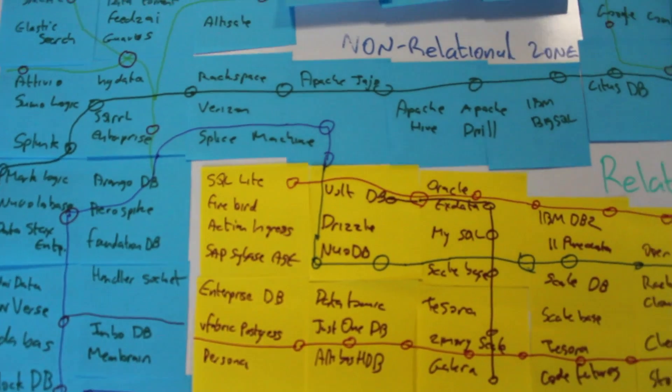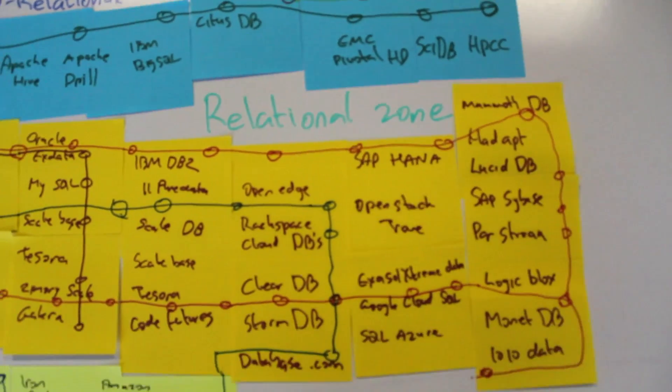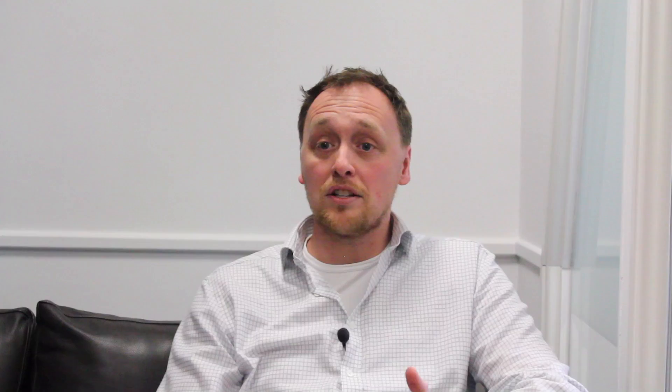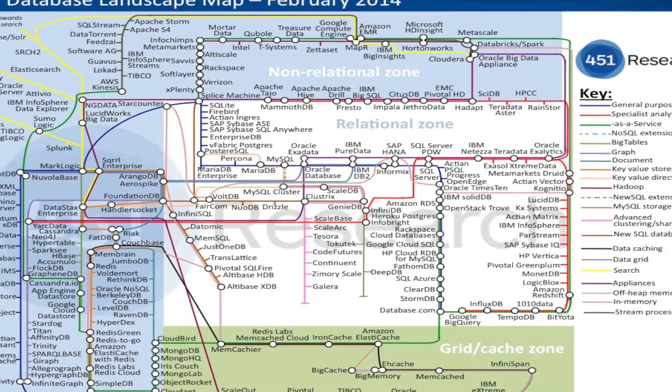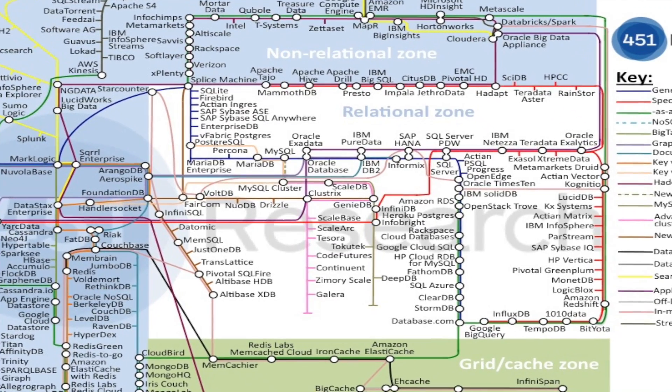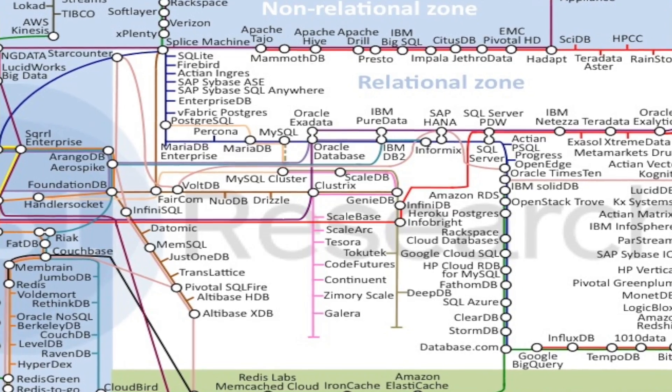By mapping out the different technologies as different lines of similar databases and highlighting the points of intersection, we found that you can actually visualize the landscape in a way that an organization can use. They can start by looking at the technologies they've adopted now and followed before, and follow the lines to identify similar emerging technologies and where different areas overlap.